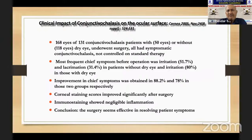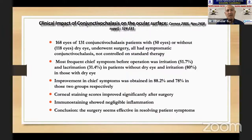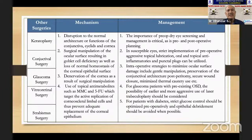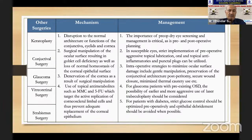Conjunctivochalasis is another relatively common condition in elderly people where loose conjunctiva affects the lid margin and pre-ocular tear film, disturbing its distribution. In mild disease you may be able to control it with steroids and Restasis, but in moderate to severe disease you will need conjunctival resection along with amniotic membrane. Other surgeries with some postulation of mechanism include keratoplasty, conjunctival surgery, glaucoma surgery, vitreoretinal surgery, and strabismus surgery — all covered extensively in the DEWS II report on iatrogenic dry eye.